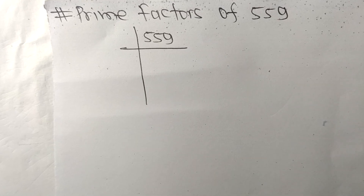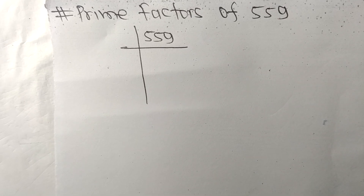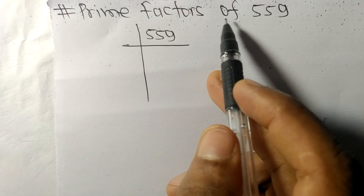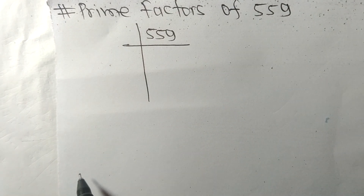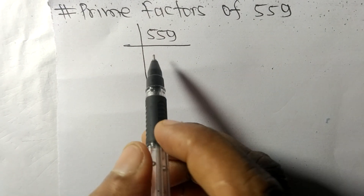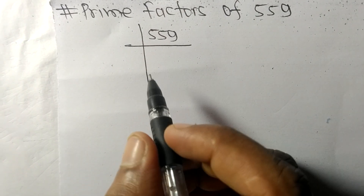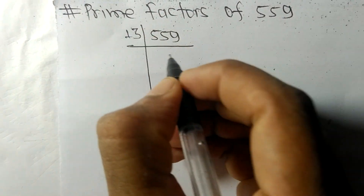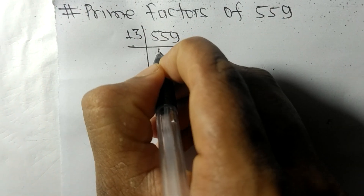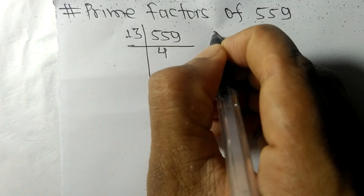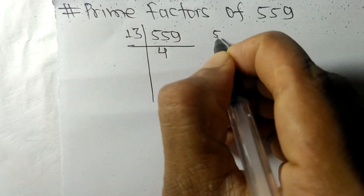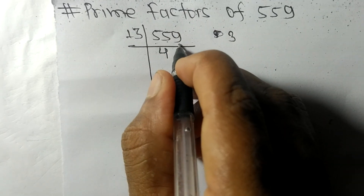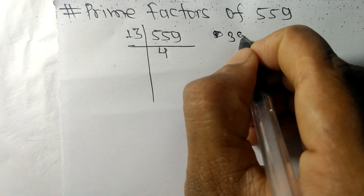Today we shall learn to find the prime factors of 559. 559 is exactly divisible by 13. 13 times 4 means 52, remainder 3, and bringing down 9 gives 39.